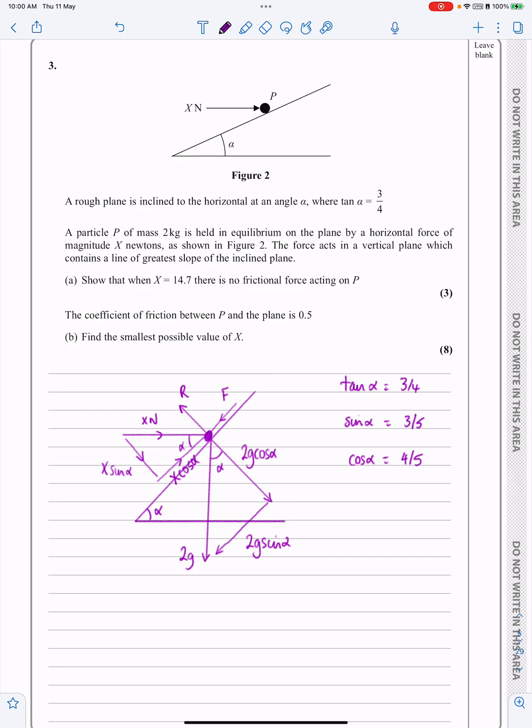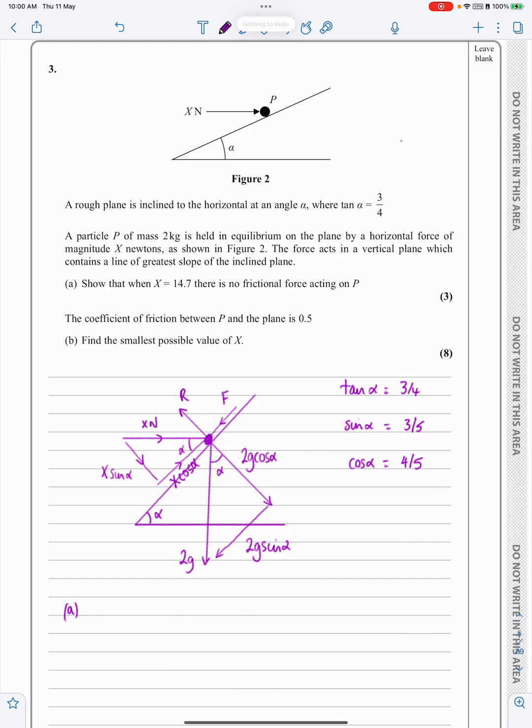Let's talk about this friction bit. It says in part A, show that when X equals 14.7, there's no frictional force acting on P. I've got two ways I could do this: I could assume that friction is equal to 0 and show that X is equal to 14.7, or I could take X as being equal to 14.7 and try and show that friction is equal to 0. I'm going to assume that friction equals 0, which means I don't need to worry about which direction that's going to be in.